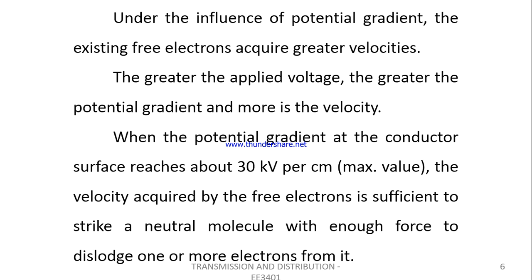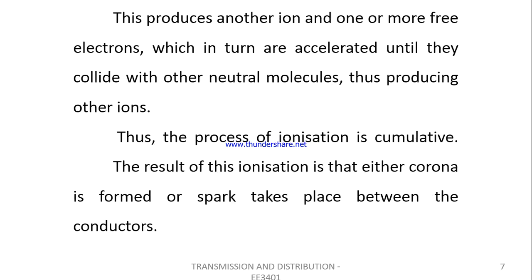When the potential gradient at the conductor surface reaches about 30 kV per centimeter, the velocity acquired by the free electrons is sufficient to strike a neutral molecule and dislodge one or more electrons from it. This produces another ion and more free electrons, which in turn get accelerated and collide with more neutral molecules, producing more ions. The process of ionization is cumulative, and this results in Corona or spark discharge taking place between the conductors.